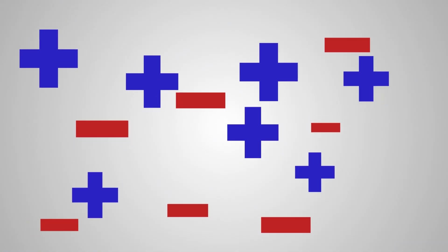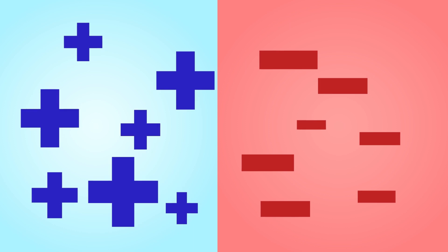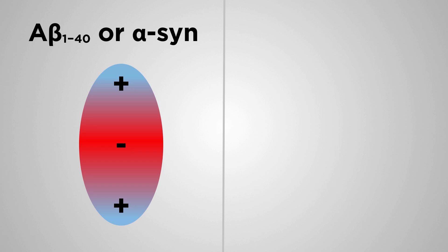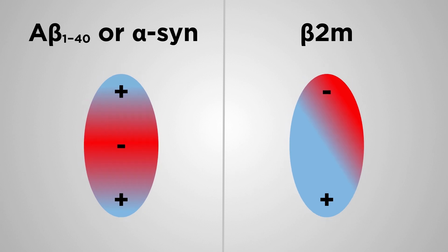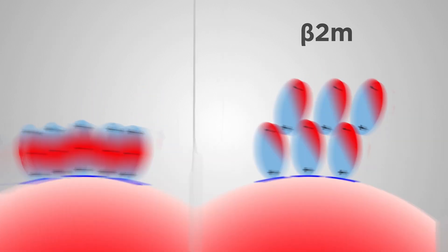The team explained this using charge distribution. The gold surface has a negative charge. Amyloid beta and alpha-synuclein are suspected to have a partially positive charge on their top and bottom. Beta-2-microglobulin has a small region of partially negative charge, and the rest partially positive. It's thought this causes the proteins to network in different ways.